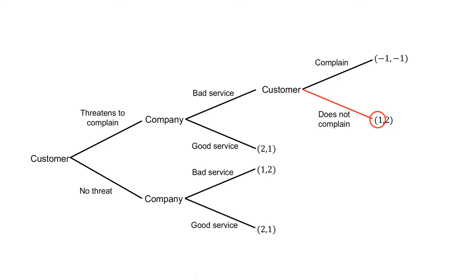They will not complain. The company, therefore, has a choice between providing good service for a payoff of one or bad service for a payoff of two. They will provide bad service. The company has the same payoff for bad service, regardless of the presence of the threat to complain, as the threat is not credible.